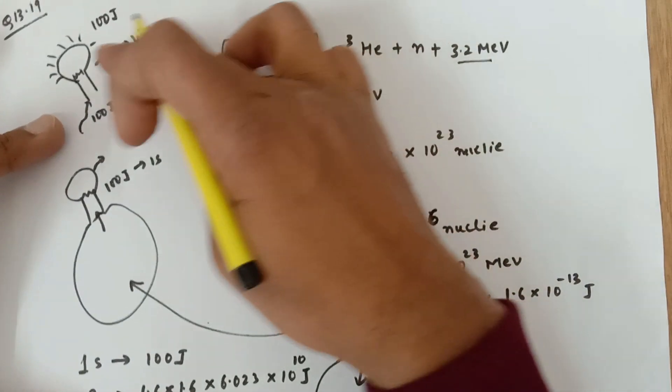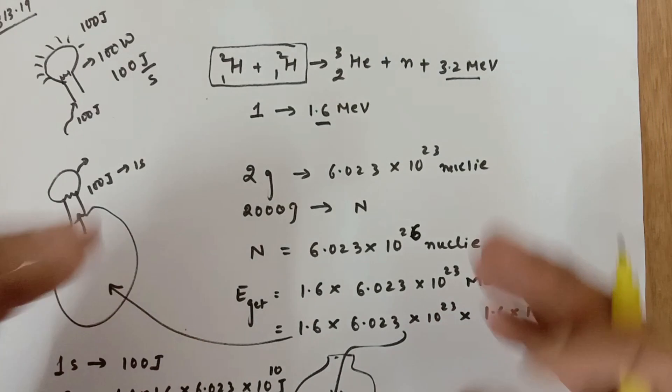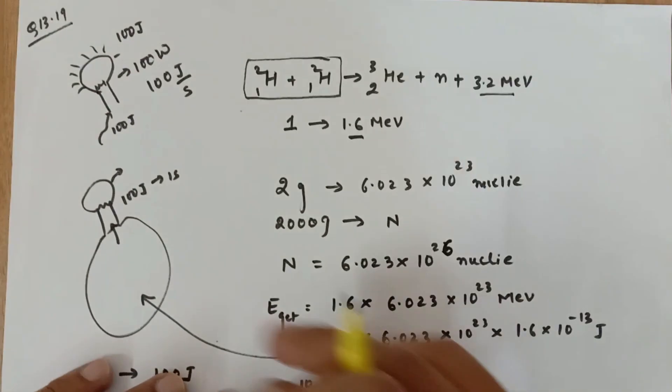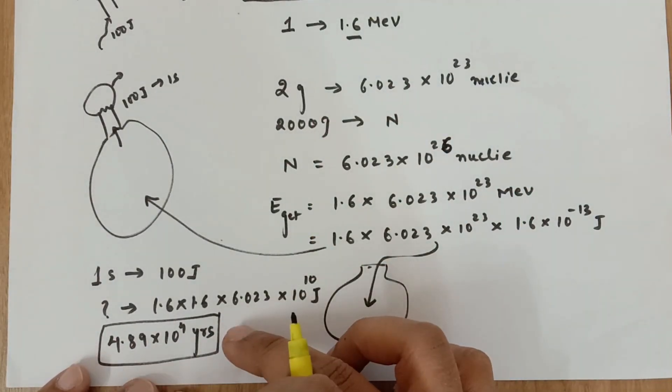But you need to understand what is the actual meaning of the question. You can see that the nuclear fusion reactions are so powerful that they give enormous amount of energy that this 100-watt bulb can be lighted up for these many years.